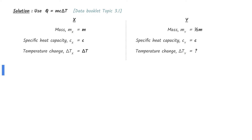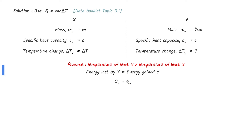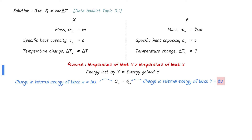Here is the summary of what we know of X and Y. Let's assume that the temperature of block X is greater than block Y. The thermal energy lost by X will equal the thermal energy gained by Y. The amount of energy change is the change in the internal energy of the block. Since Y gains the same amount of energy that X lost, the change in internal energy of block Y is also delta U. Use the equation given in the data booklet and put in the values. Rearrange to find the change in temperature of Y — the answer will be 2 delta T.